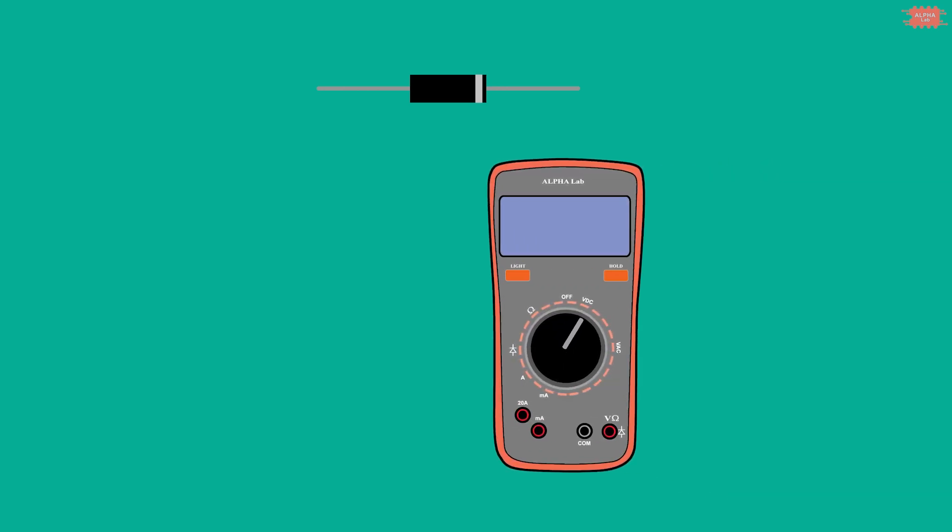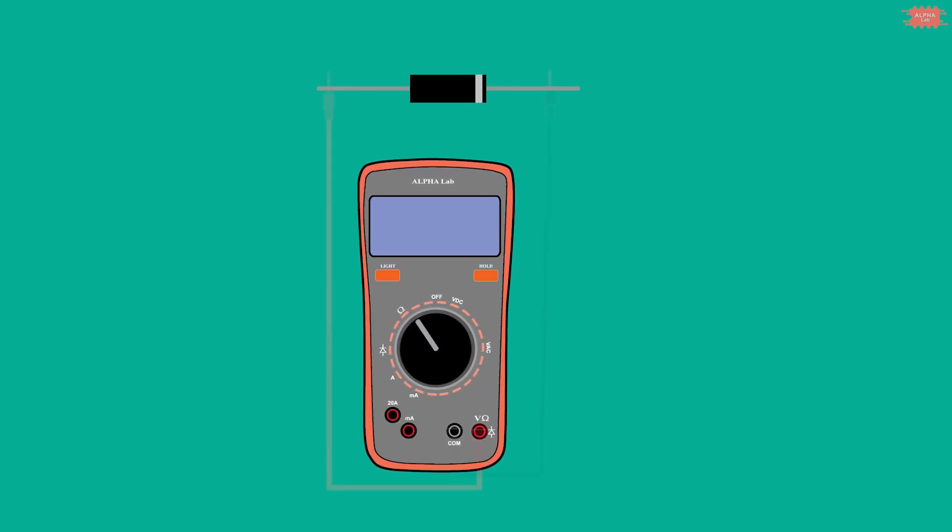To check a diode, a digital multimeter is often used. Rotate the scale to the diode scale. At the forward bias direction, the diode conducts and the digital multimeter displays a value. If measurement sticks are reversed, the diode doesn't conduct and the digital multimeter doesn't display a value.